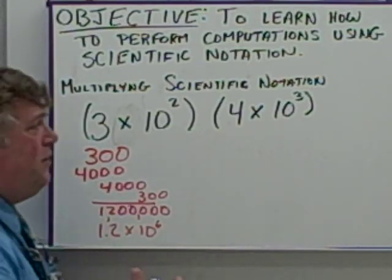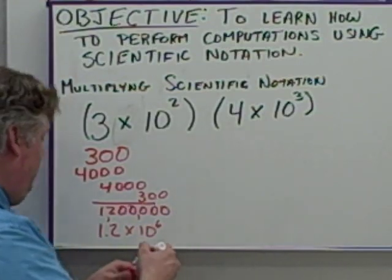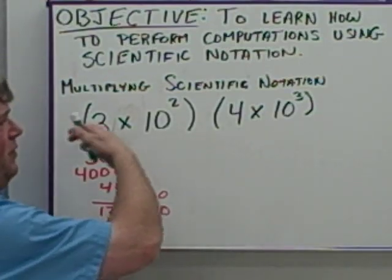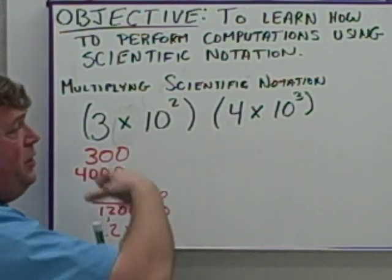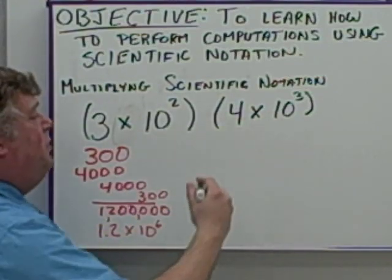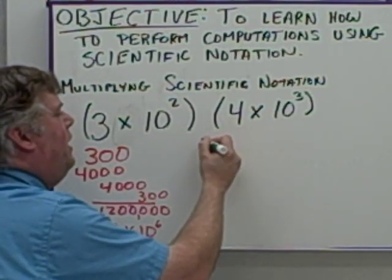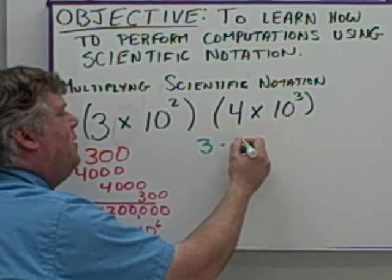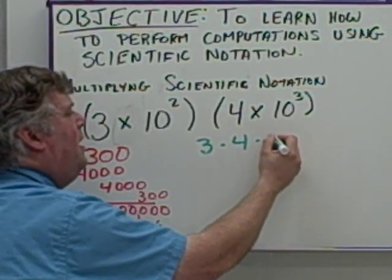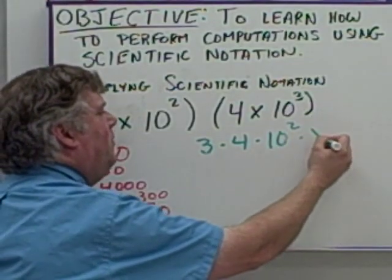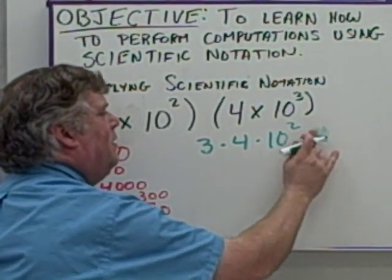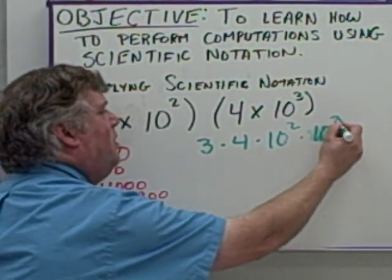So there is another way to look at it. If you start looking at it in terms of the fact that this is all being multiplied, and you can rearrange the order in multiplication, I could change the order here to be 3 times 4 times 10 squared times 10 to the 3rd power.